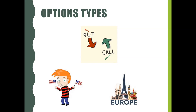Put Option is an option to sell — put buyers have the right but not the obligation to sell the underlying asset. American options can be exercised any time on or before the expiration date. European options can be exercised only on the expiration date.